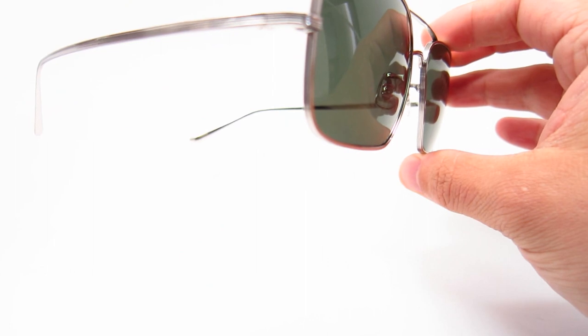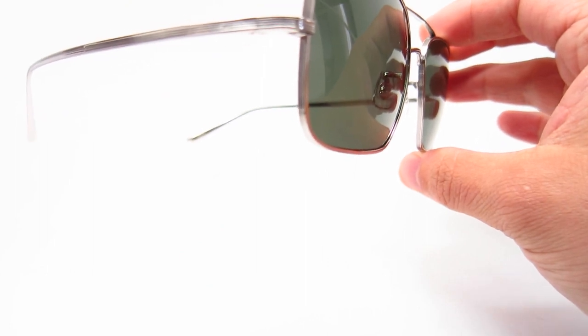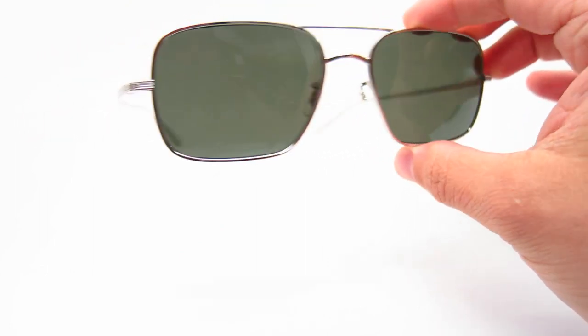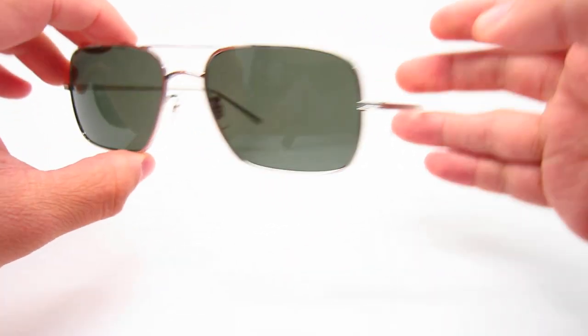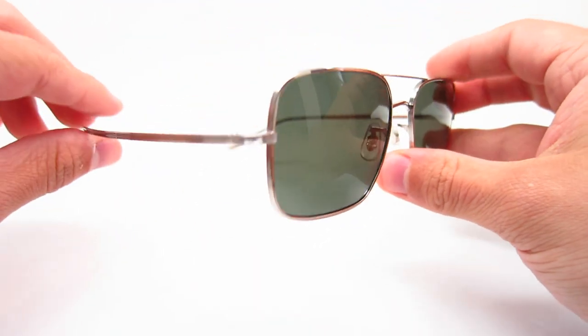Most Oliver Peoples frames, the metal ones are usually gonna be made in their Japan factory. Cause I guess the Japanese are great at metal work.